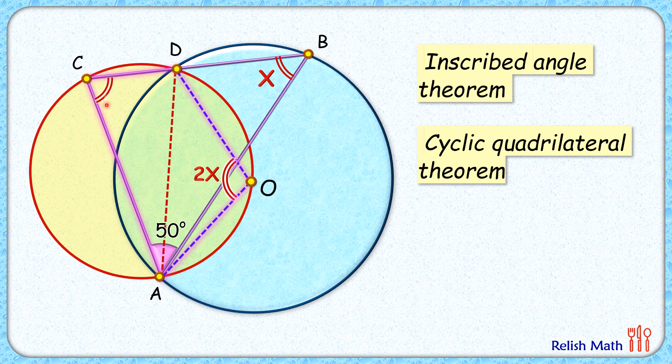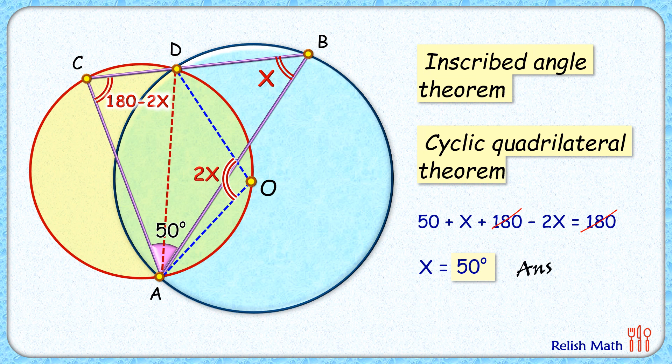Looking at triangle BAC and applying the angle sum property, we get 50 plus x plus 180 minus 2x equals 180 degrees. Simplifying this equation, the 180 cancels out, and we get x equals 50 degrees. That's our answer.